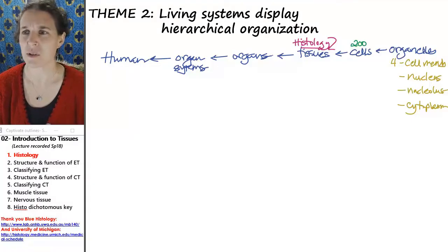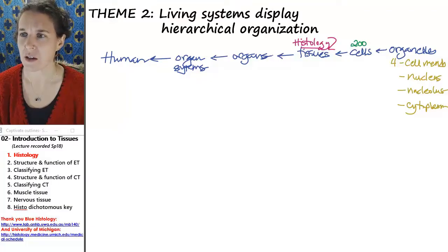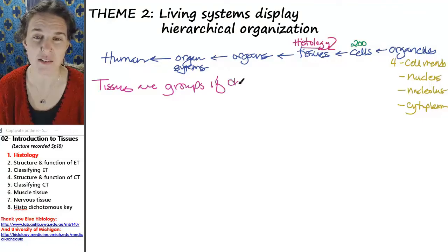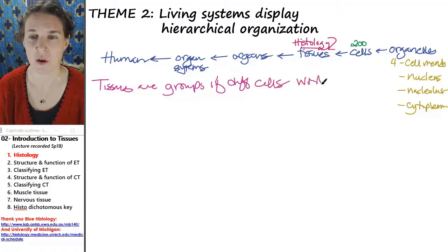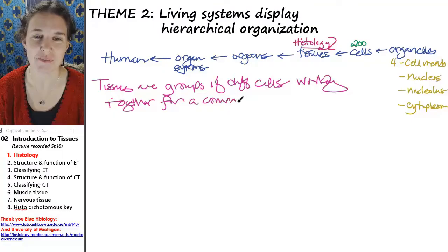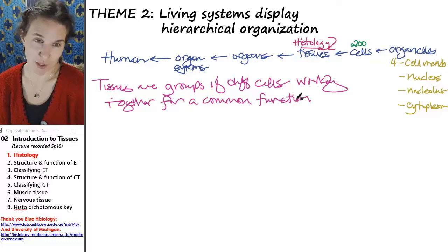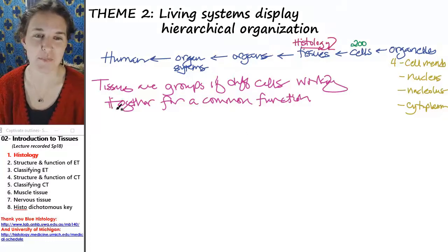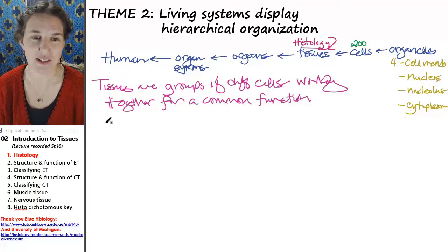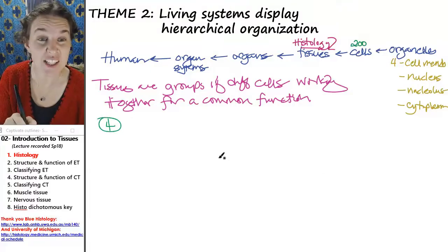What is a tissue? Tissues are groups of different cells working together for a common function. If a group of cells is working right next to each other but not doing the same job, they're probably not part of the same tissue — they have to be working together for a common goal. There are four big-picture tissue types in the human body, and that's what we're going to talk about today.